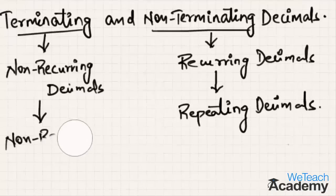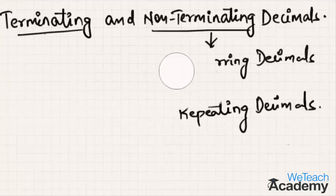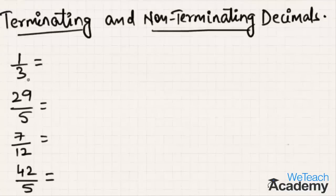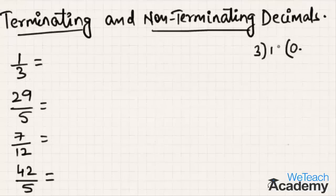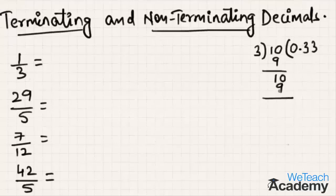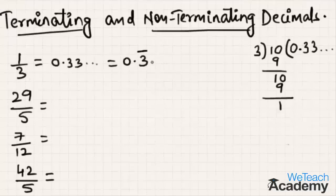Let us consider a few more examples to find out if they are terminating or non-terminating decimals. First, let us divide 1 by 3. Since 1 is not divisible by 3, we place a point here and write 0. Now 3 times 3 is 9, and 10 minus 9 gives remainder 1. This keeps repeating, so the decimal form of 1 by 3 is 0.333..., written as 0.3 with a bar over 3, since the repeating part gets a bar placed over it.